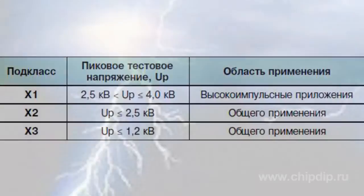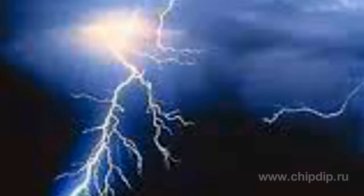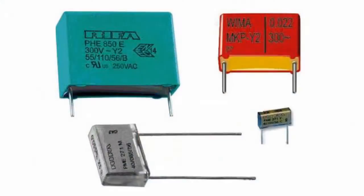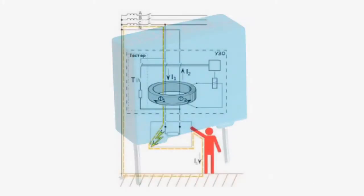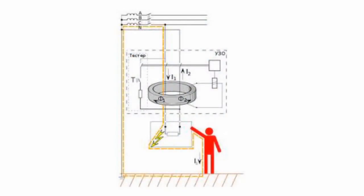These peak voltages can be caused by lightning or switching processes in adjacent equipment and in a device which uses a condenser. Y capacitors are connected between the phase and neutral and are effective in suppressing asymmetric differential noise. They are used where the failure of the capacitor can cause electrical shock.